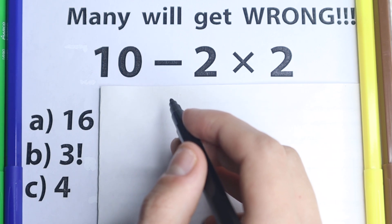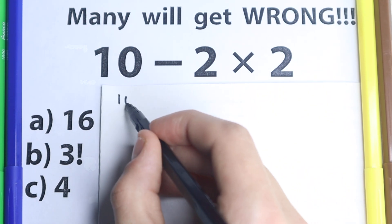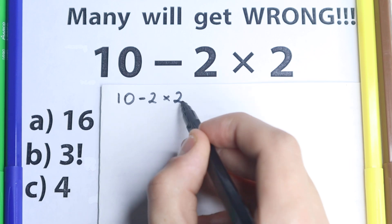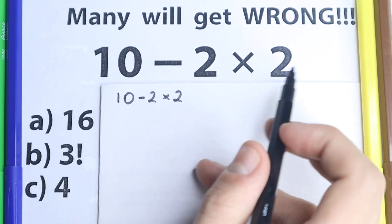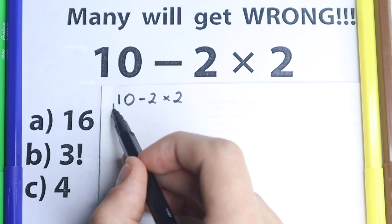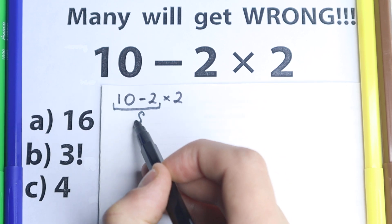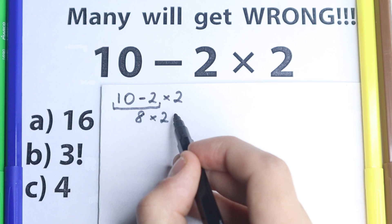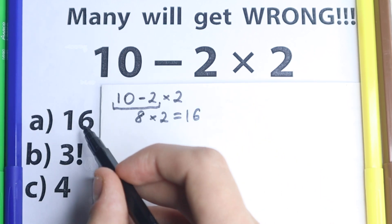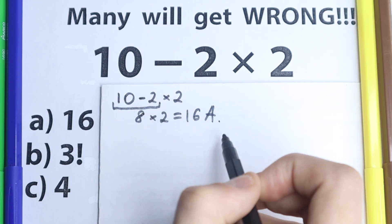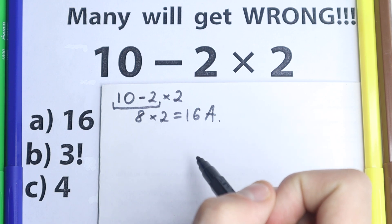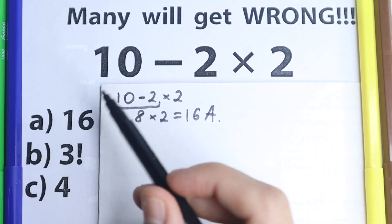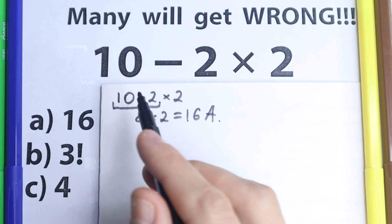Before solving this question I want to start with a wrong solution. A lot of students solve it like this: 10 minus 2 times 2 — they go in the obvious way from left to right. They get 10 minus 2 equal to 8, then 8 times 2 equal to 16. They say okay, this is option A, the correct answer. They go left to right and see this option, which is maybe not correct.